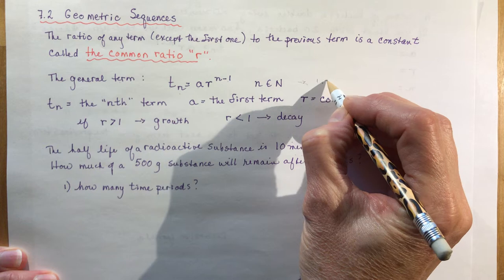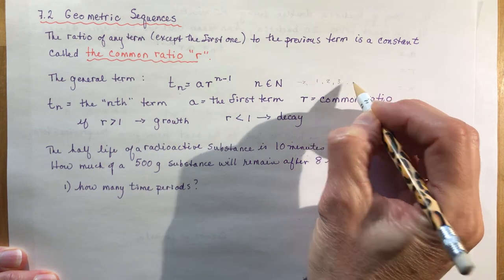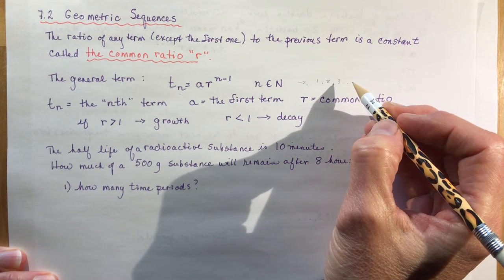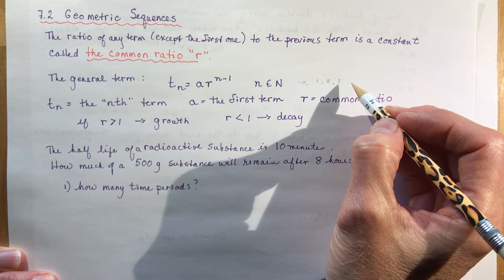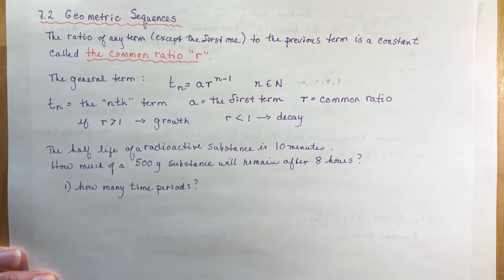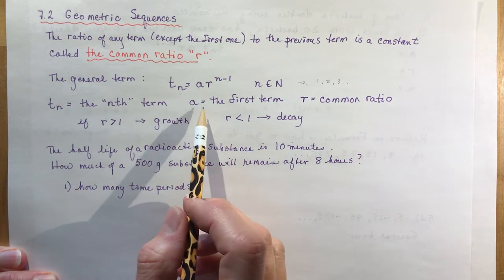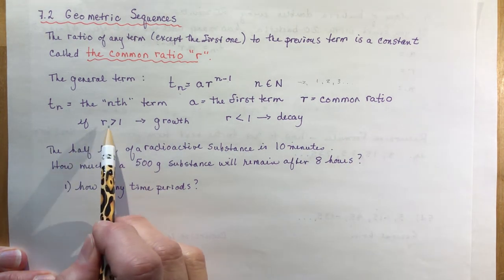Natural numbers are your counting numbers like 1, 2, 3 — they're whole numbers. You're never going to get an n value that is a fraction; if you do, you've made a mistake somewhere. So: tn is the nth term, a is the first term, r is the common ratio.